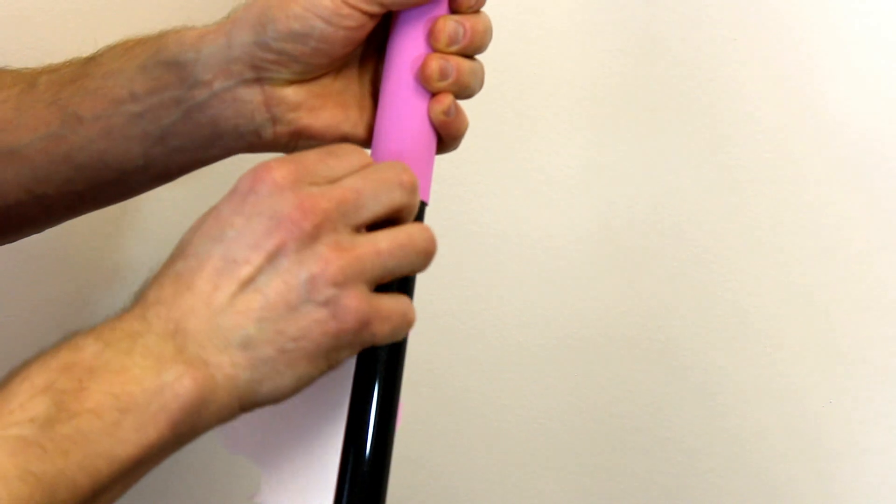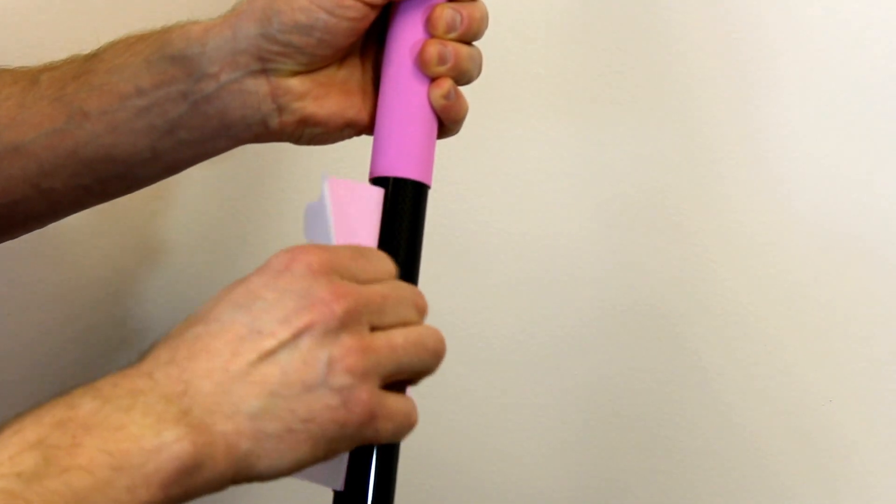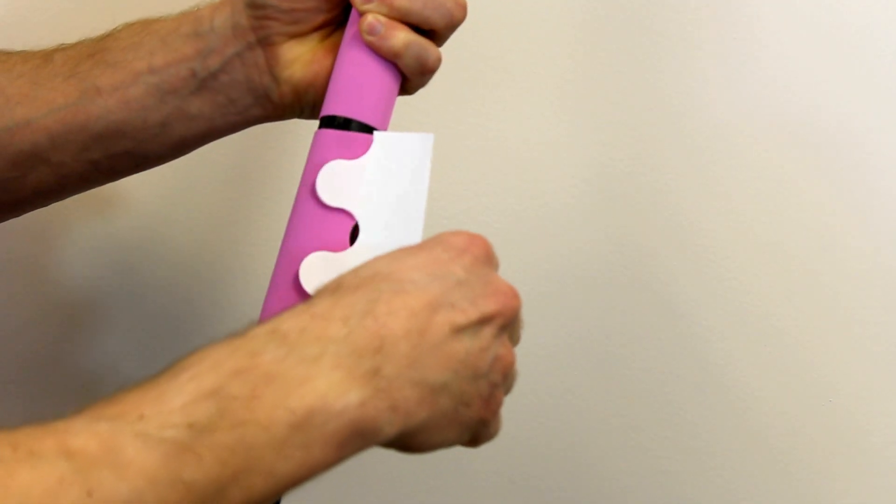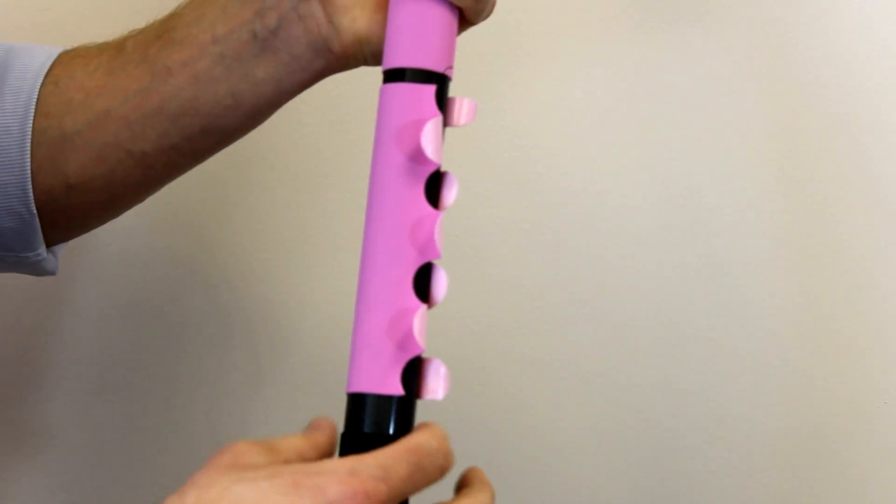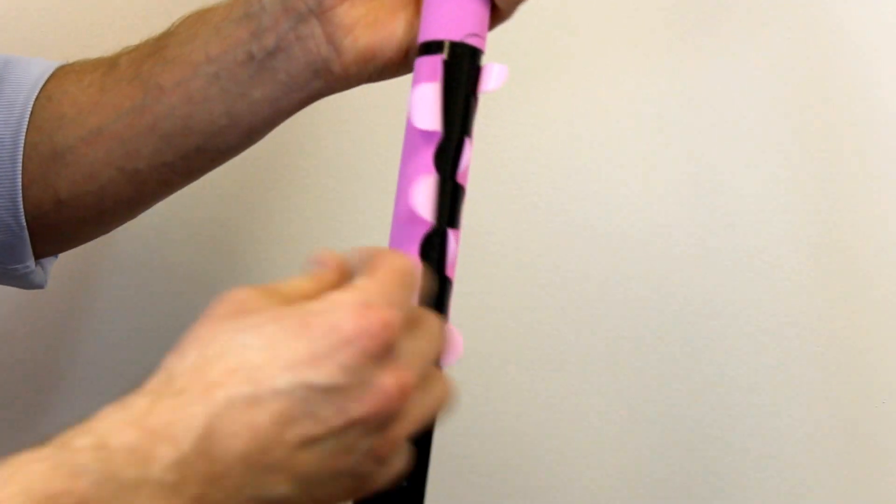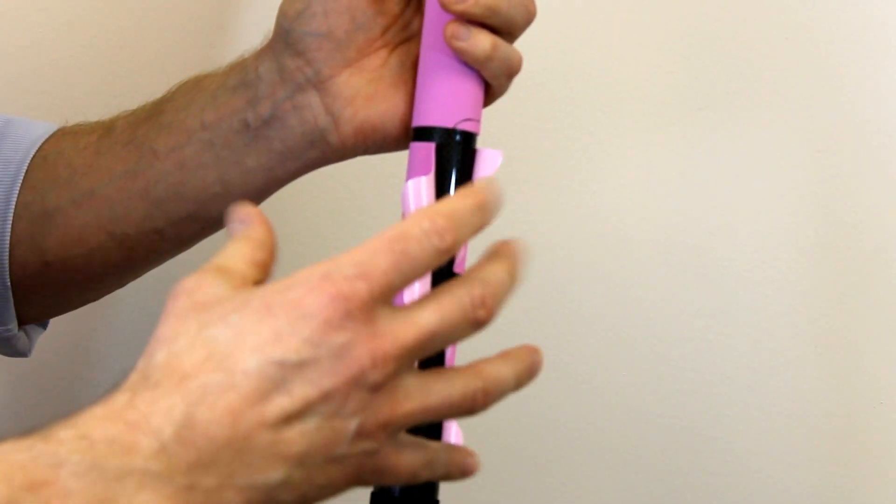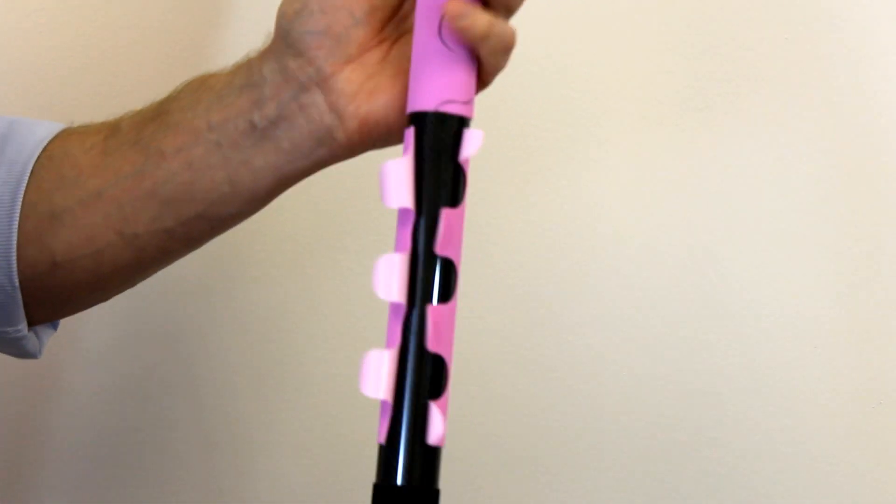Then take the other side and roll that on the paddle. You can see, because paddles change a little bit in diameter, the product is meant to stretch, so it will fit a little bit of a different diameter in paddles.